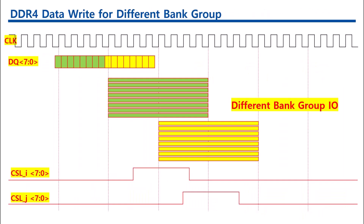Access between different bank groups with DDR4 requires a delay of 4 clock cycles, which matches a burst length of 8. Because 4 clock cycles is 8 clock edges — both rising and falling — a burst length of 8 puts out or receives data on every clock edge in that 4-clock period very efficiently. In this case, there is no wasted bus bandwidth, and one command can follow another without any wasted cycles on the bus where data is not being transferred.